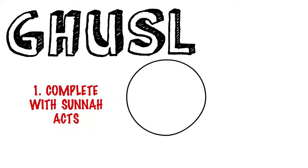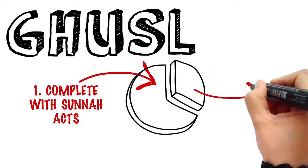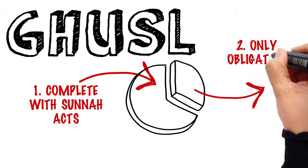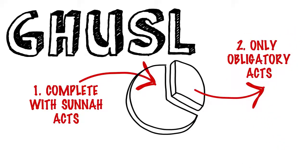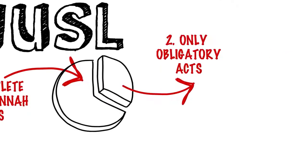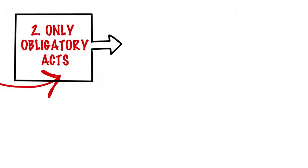Ghusl can be taken in two ways: a complete Ghusl with all the Sunnas of the Prophet, and a partial or sufficient Ghusl, which means only doing what is obligatory to free yourself from the ritual impurity. So what are these obligatory acts of Ghusl?